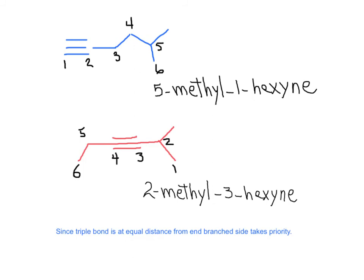Now I want to compare this molecule with the isomer of 5-methyl-1-hexyne. This one is a terminal alkyne with six carbons long. This is an internal alkyne with six carbons long. In the first case, the carbon-carbon triple bond is at the end, so it is easy to assign that it is carbon number one. In the second case, the triple bond is at the same distance from the end.